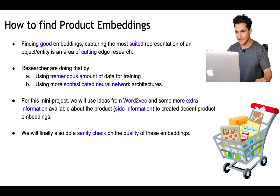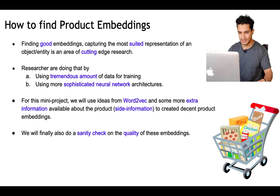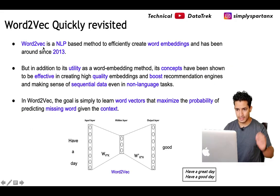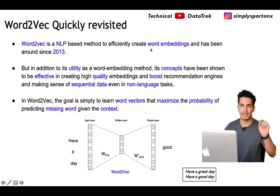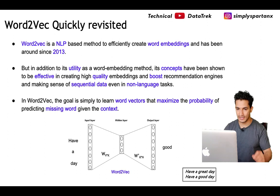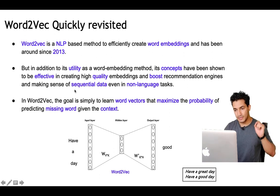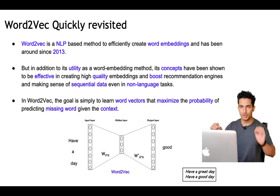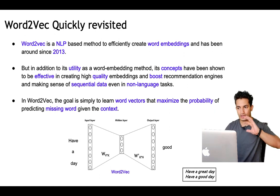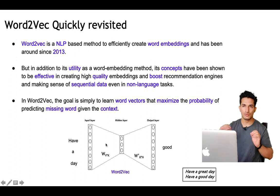For this mini-project we will use an idea from Word2Vec, with some extra side information about the product, to create decent product embeddings. We will also do a sanity check on the quality. Word2Vec is an NLP-based method to efficiently create word embeddings and has been around since 2013. Beyond its utility as a word embedding method, its concepts have proven effective for creating high-quality embeddings, boosting recommendation engines, and making sense of sequential data even in non-language tasks.